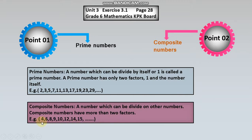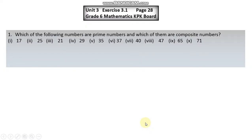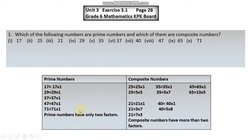Chalte hain question number one ki taraf: 'Which of the following numbers are prime and which of them are composite?' Seventeen ke factors kitne hain? Seventeen sirf one aur seventeen par divide hota hai — in ke do factors hain. Twenty nine: one aur twenty nine. Isi tarah seventeen, twenty nine, thirty seven, forty two, aur seventy one. Yeh prime numbers hain kyunki in ke sirf do factors hain.